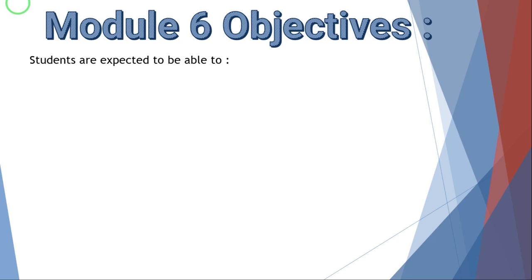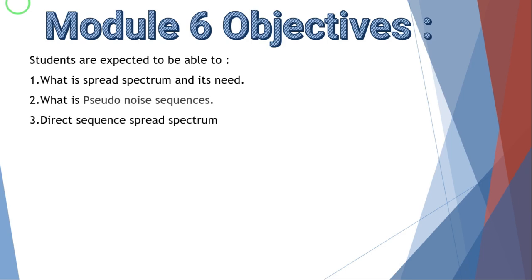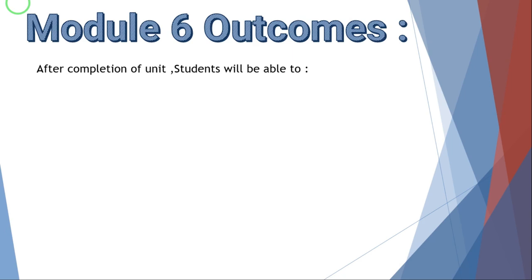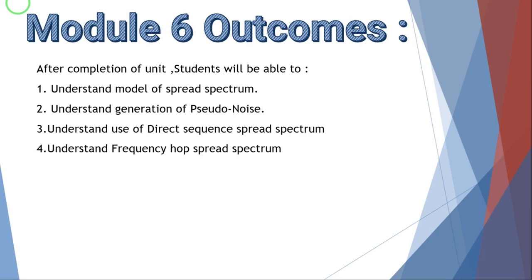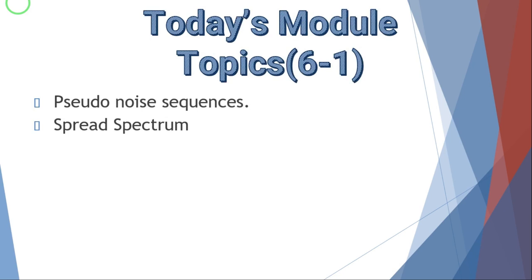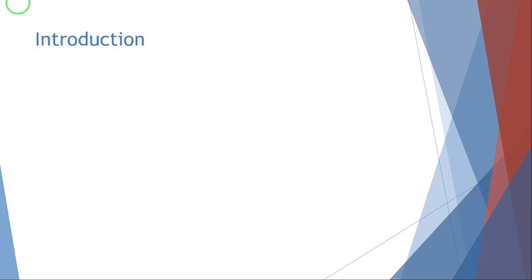The objectives of this module are that students are expected to understand what is Spread Spectrum and its need, what is Pseudo Noise Sequence, Direct Sequence Spread Spectrum, and Frequency Hop Spread Spectrum. After completion of the unit, students would be able to understand the model of Spread Spectrum, generation of Pseudo Noise, use of Direct Sequence Spread Spectrum, and Frequency Hop Spread Spectrum.